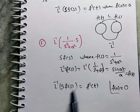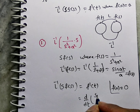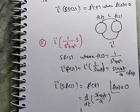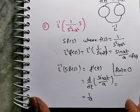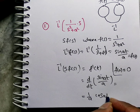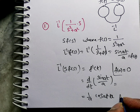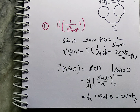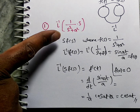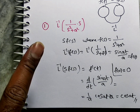So L inverse of S·F(S) equals f'(T), which is d/dT of sin(AT)/A. Writing 1/A outside, the derivative of sin(AT) is cos(AT)·A. The A cancels with the 1/A, and you will have cos(AT) only. You can verify: the Laplace transform of cos(AT) is S/(S²+A²), which confirms the multiplication by S method.